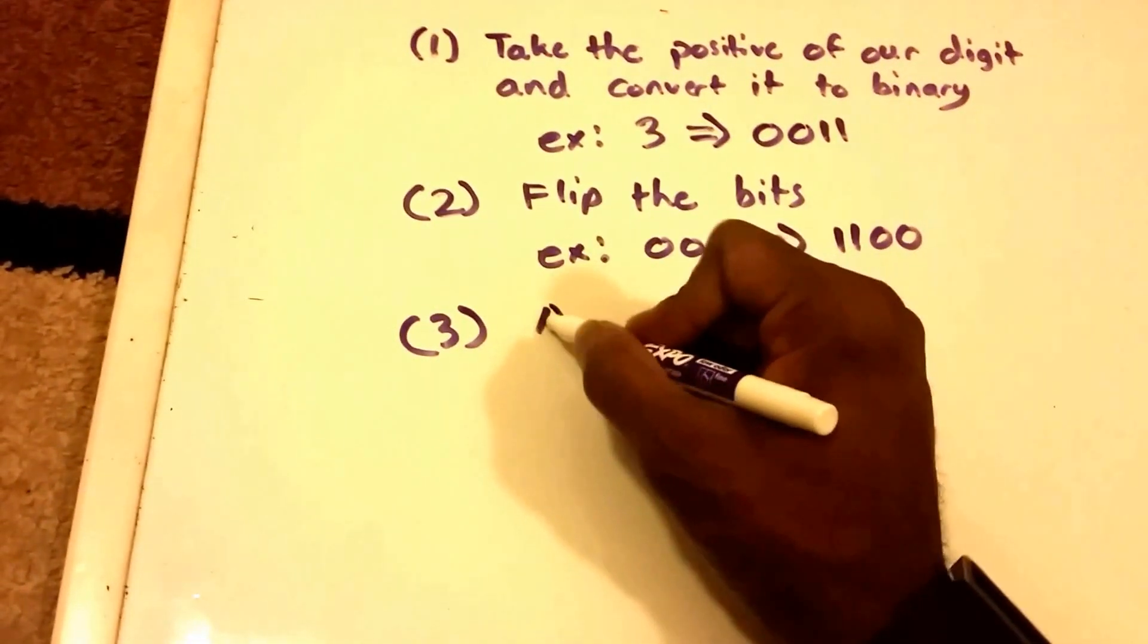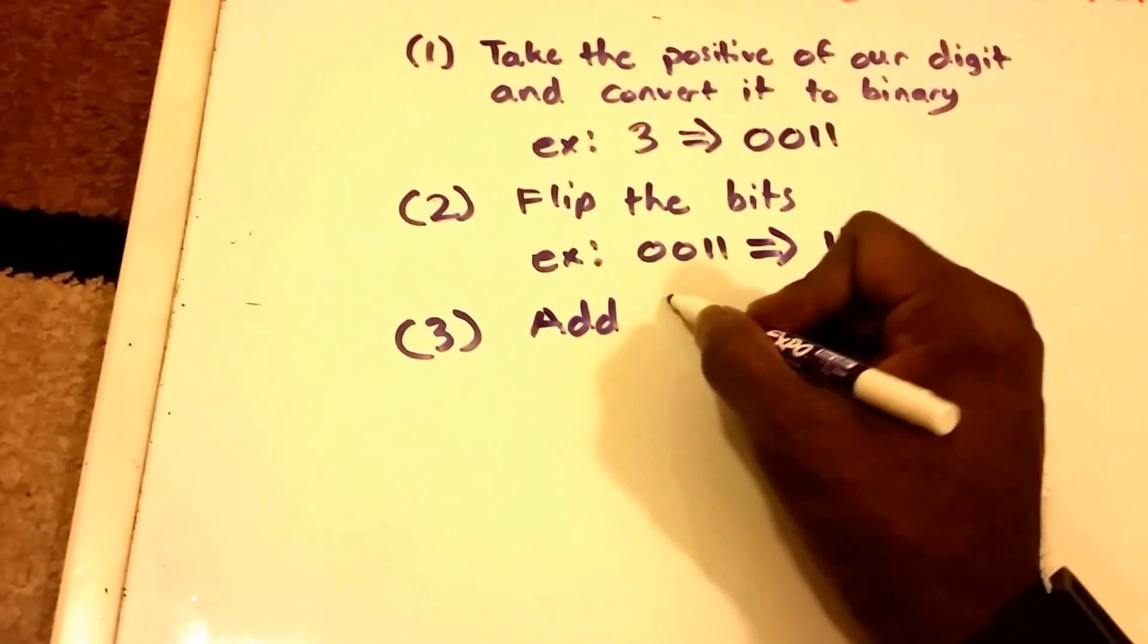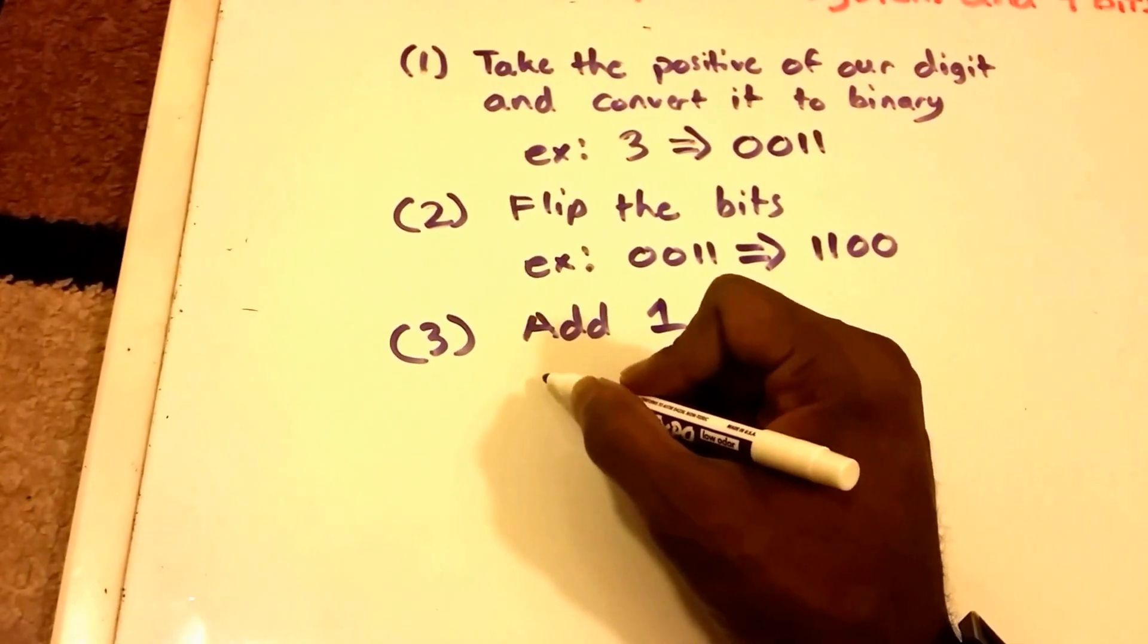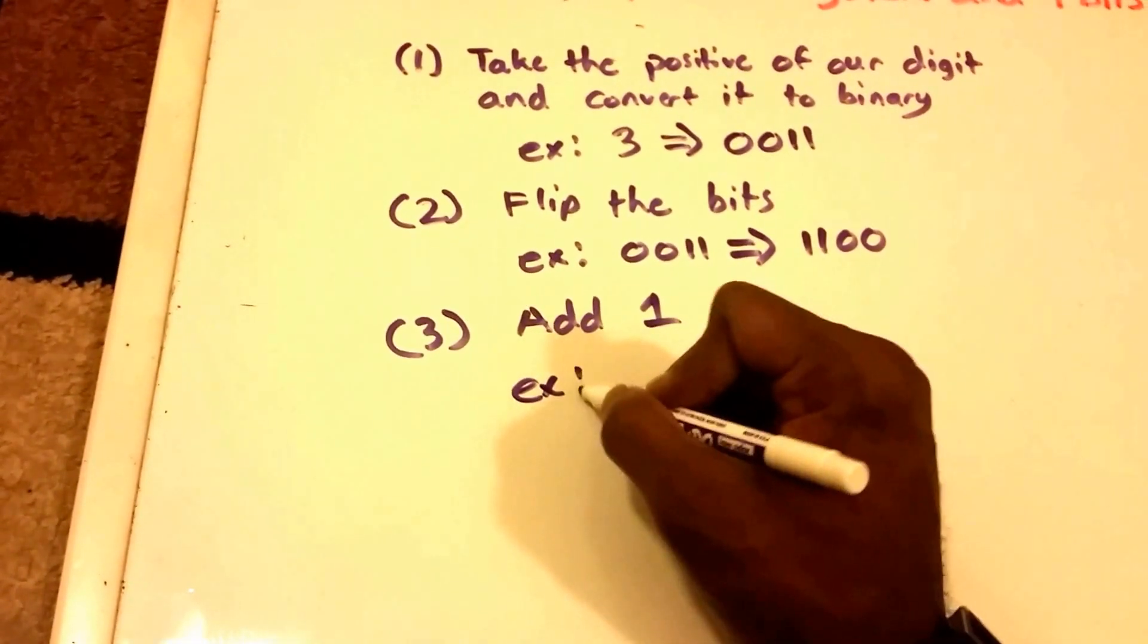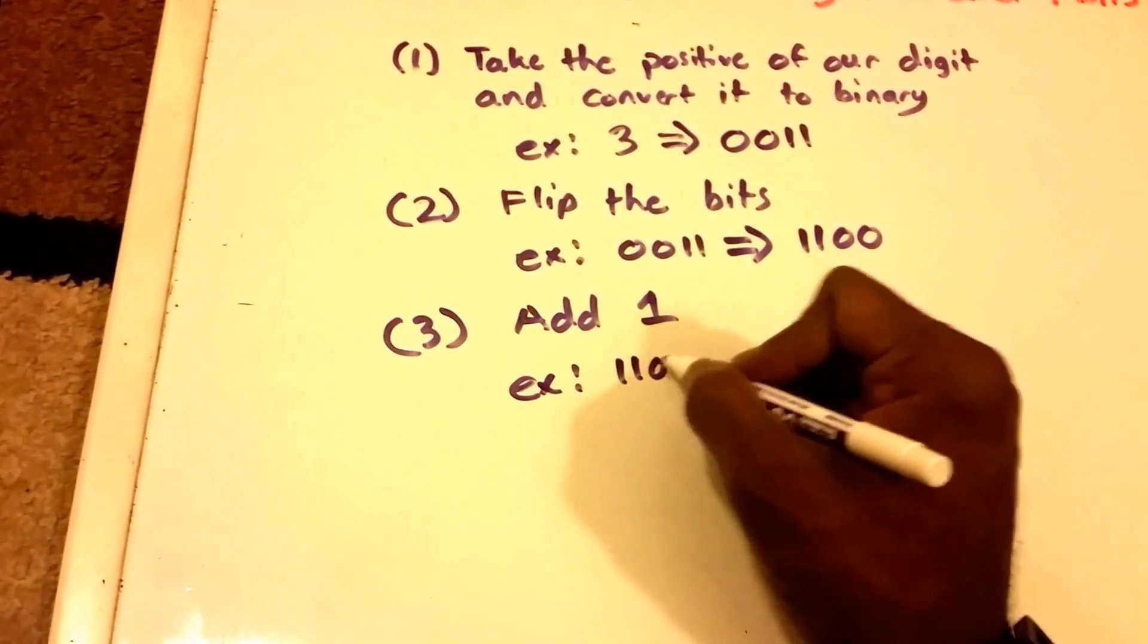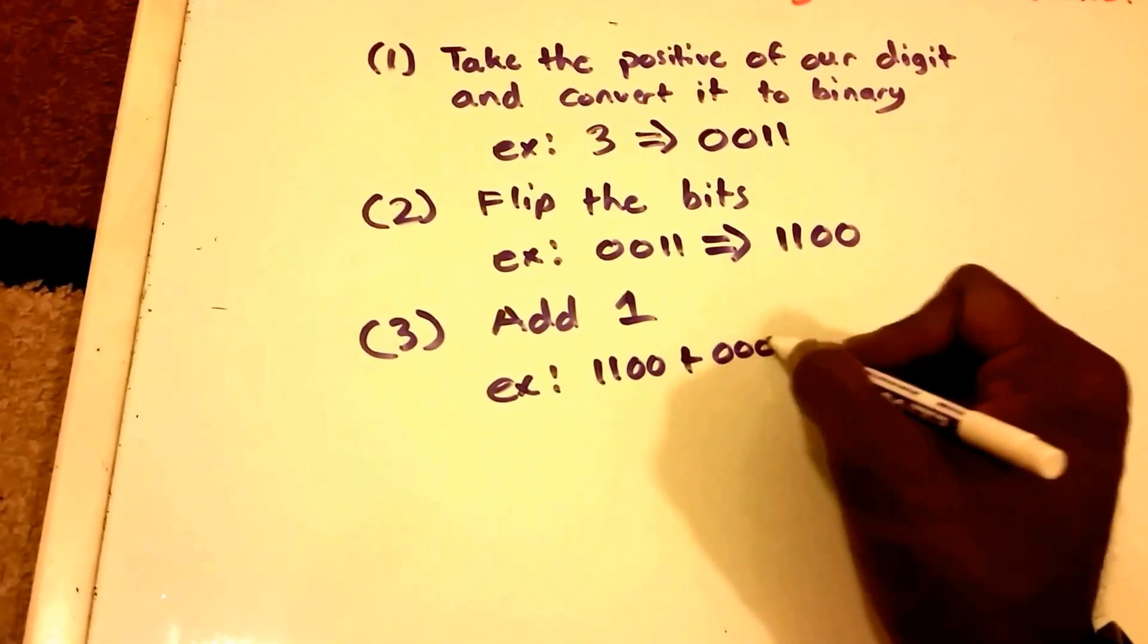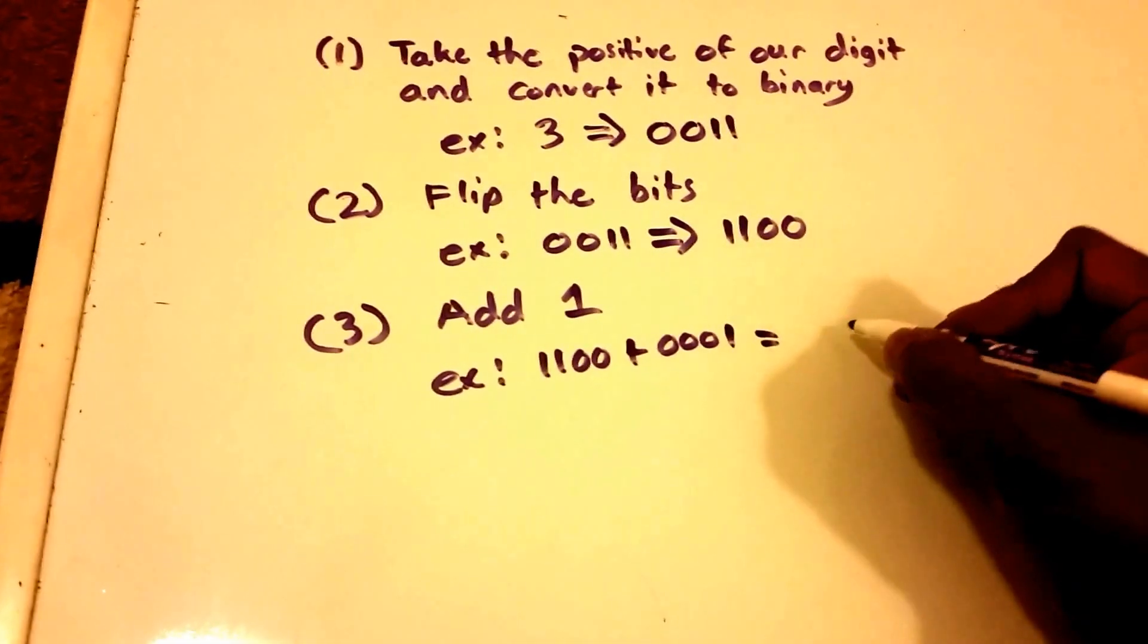So we get 1100 plus 0001, and that gives us 1101.